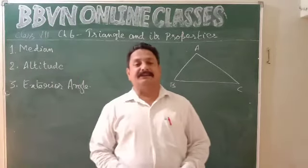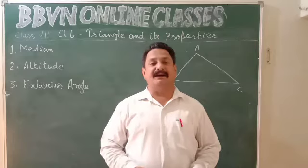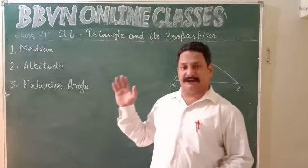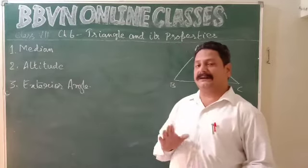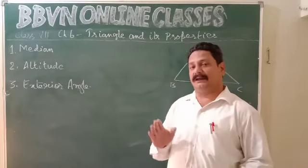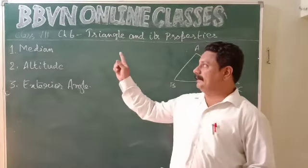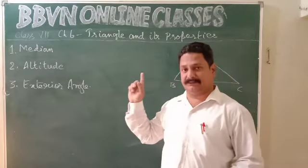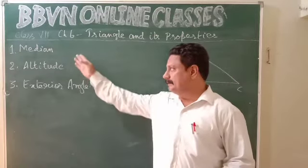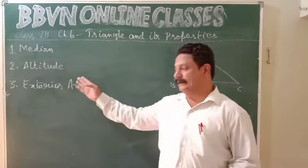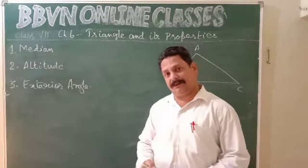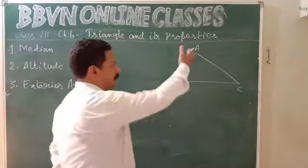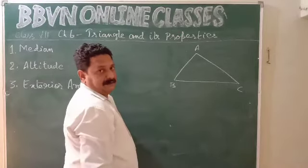Good morning, Class 7. Welcome back to BBVA online classes. Today we are starting a new chapter — we completed the chapter Lines and Angles, and today we are starting Chapter 6: Triangle and Its Properties. We'll study three things: median, altitude, and exterior angle of a triangle. ABC is the triangle I have drawn.